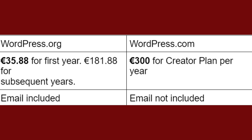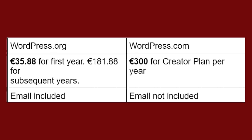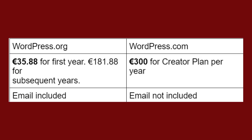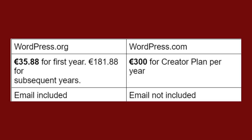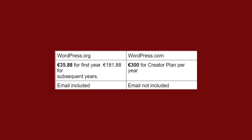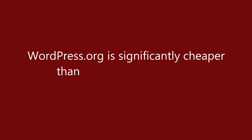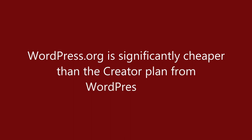Take a look at this table. You can see that the cost for the first year with the creator plan with WordPress.com — the minimum plan I think you need — is 300 euros, and this doesn't include an email. The cost of your first year with WordPress.org is 33.88 if you use SiteGround for your hosting. This is an introductory offer for your first year so subsequent years will be 181.88, and you do get a free email with it. You can see that the WordPress.org option is significantly cheaper than the WordPress.com creator plan, which is the plan I think you should go for in order to get that minimum level of functionality in your website.